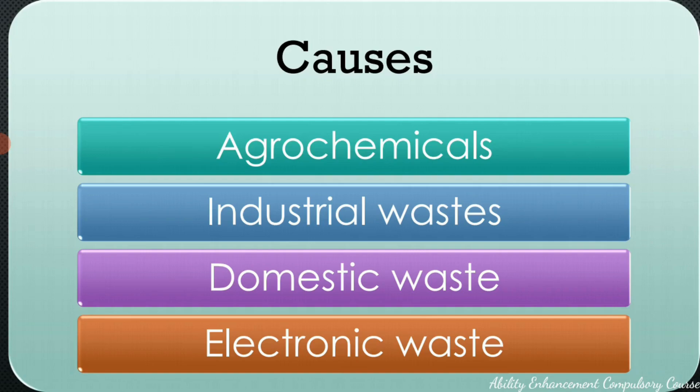Examples include the use of DDT or the use of endosulfan, which was banned in Kerala in 2005. These are all examples of chemicals which have been used beneficially in agriculture but are causing pollution to the soil. These are the major causes of soil pollution.